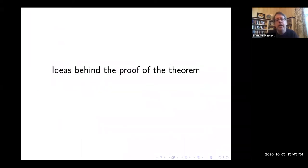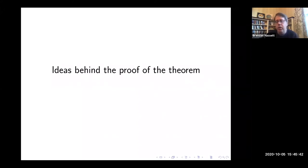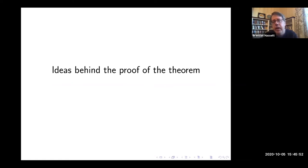I'd like to describe the ideas behind the proof of the theorem. There are really two sets of ideas: one is the classical geometry of these complete intersections, and the other is ideas that allow you to construct invariants that shed light on the Chow groups of the corresponding varieties.